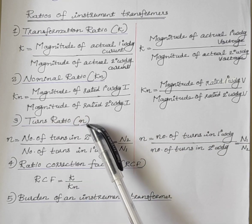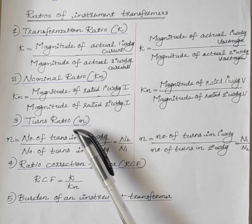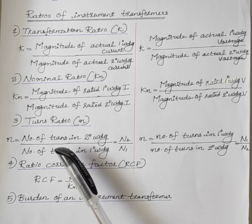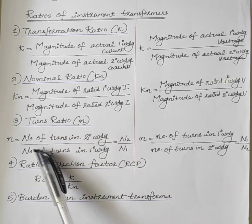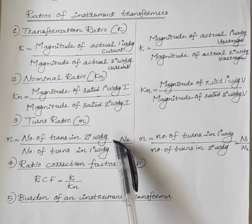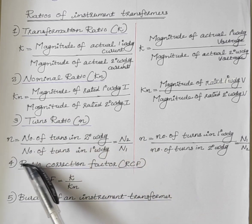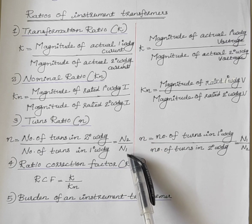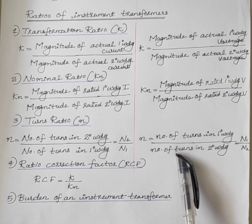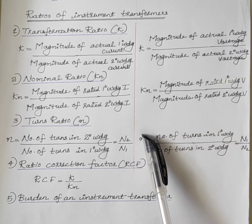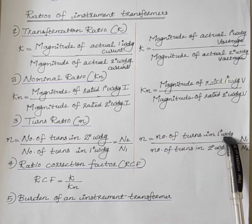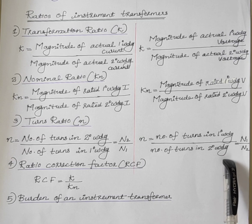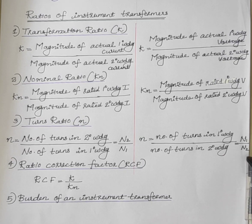The third one is turns ratio, represented by N. The turns ratio of a current transformer is the ratio of the number of turns in the secondary winding to the number of turns in the primary winding, N2 by N1. In the case of a potential transformer, it is the ratio of the number of turns in the primary winding to the number of turns in the secondary winding, N1 by N2.